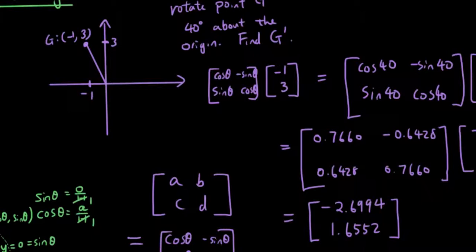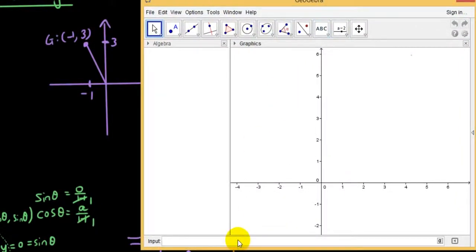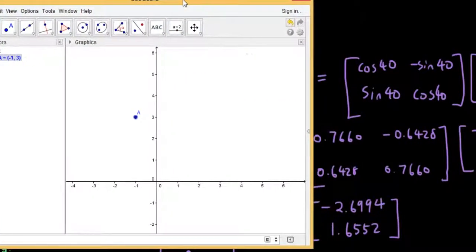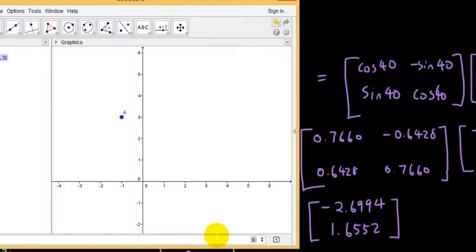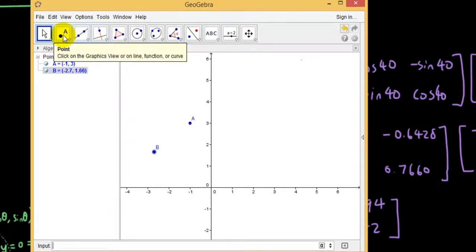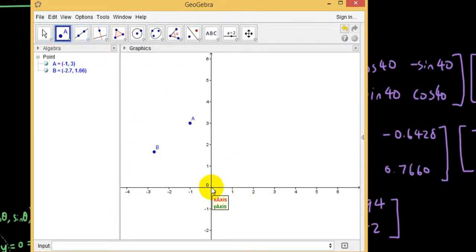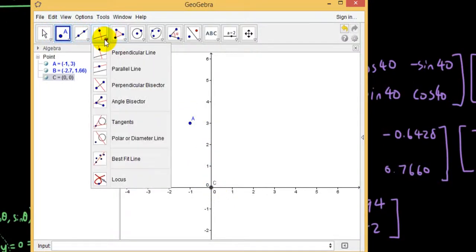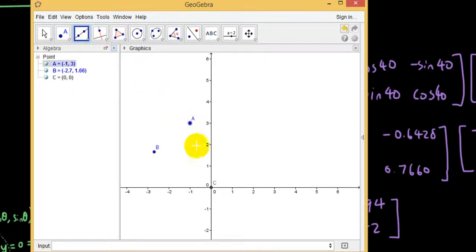So let's open up GeoGebra and the first point that I had was x is negative 1, y is 3. So let's plot that point and the point that I have calculated is negative 2.6994 and the y-coordinate is 1.6552. So if I draw that point on, I have point A here, point B here. Now what I'm going to do is I'm going to join this up to the origin, join both points up to the origin using the line tool in GeoGebra, or segment tool. Interval between 2 points. And let's join it up.